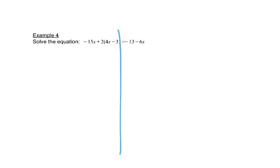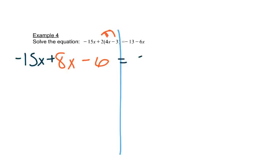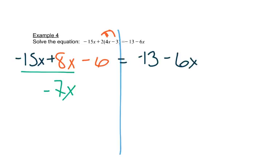Let's look at a couple more. Draw a line straight down. This again has parentheses so we want to get rid of them. I'm going to start by writing negative 15x in front, then 2 times 4 which is 8x, and 2 times negative 3 which is minus 6. We still have equals negative 13 minus 6x. Combining like terms: negative 15x plus 8x is negative 7x, giving us negative 7x minus 6 equals negative 13 minus 6x.